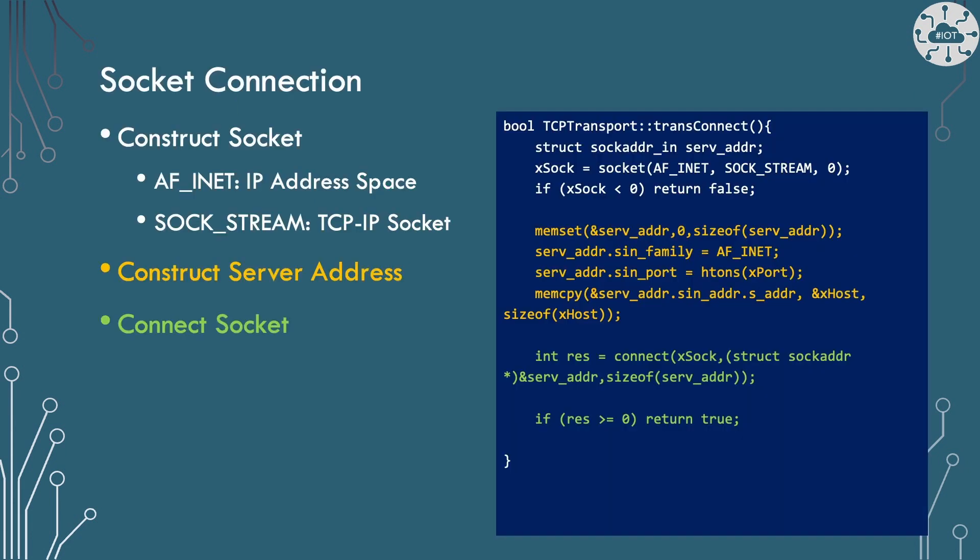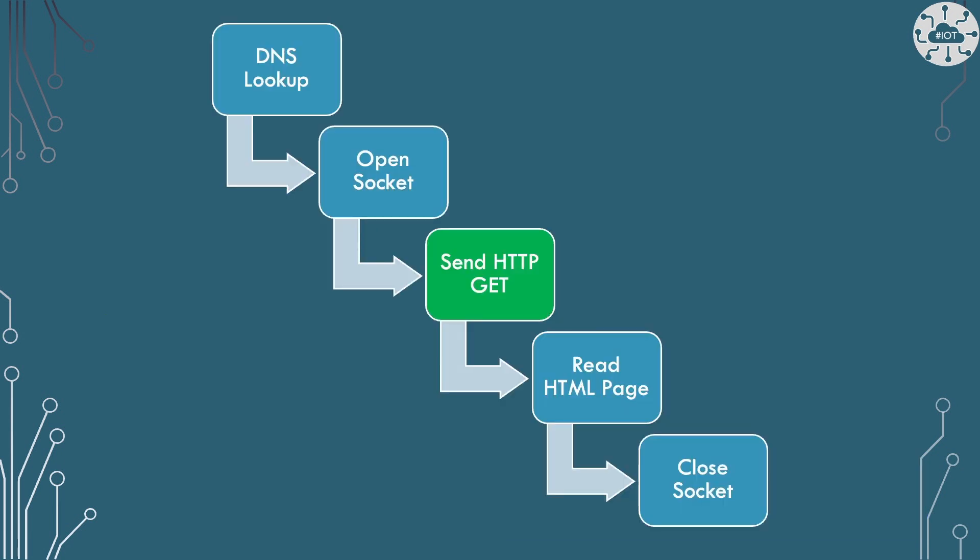By the time we reach the transconnect function, we have an IP address and a port to connect to. We set up our socket using AF_INET address space — basically using IP addresses — then SOCK_STREAM for a TCP/IP socket. There is some structure set up for the server address before we use the LWIP function connect to connect to the socket. Once the socket connection is open, we can start the HTTP protocol and its GET request.